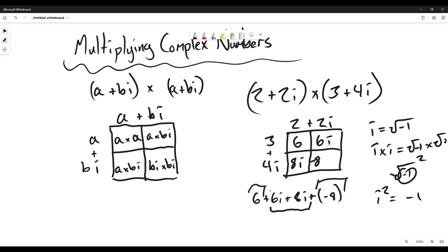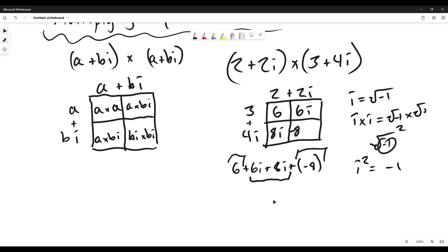So let's add our constants first. 6 plus negative 8, the same thing as 6 minus 8, which is negative 2.